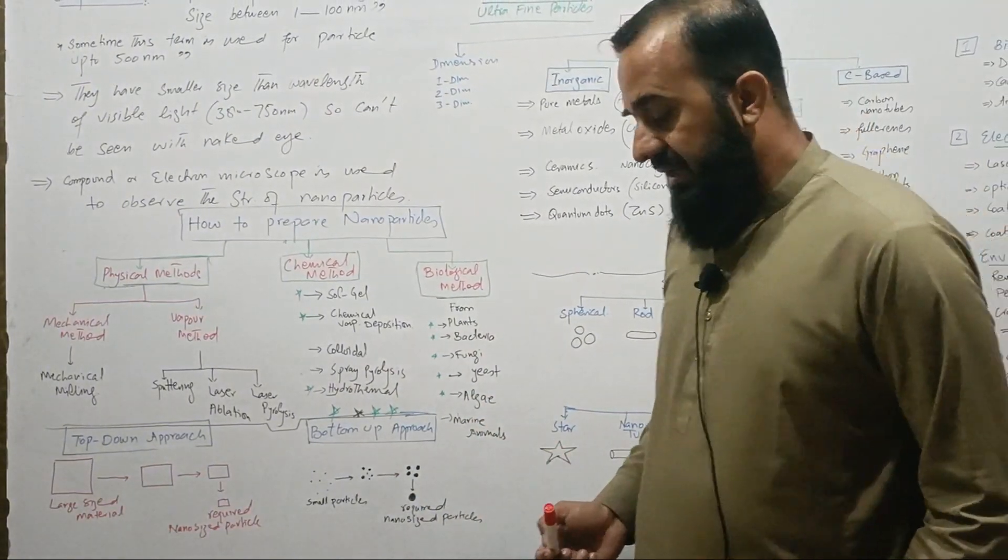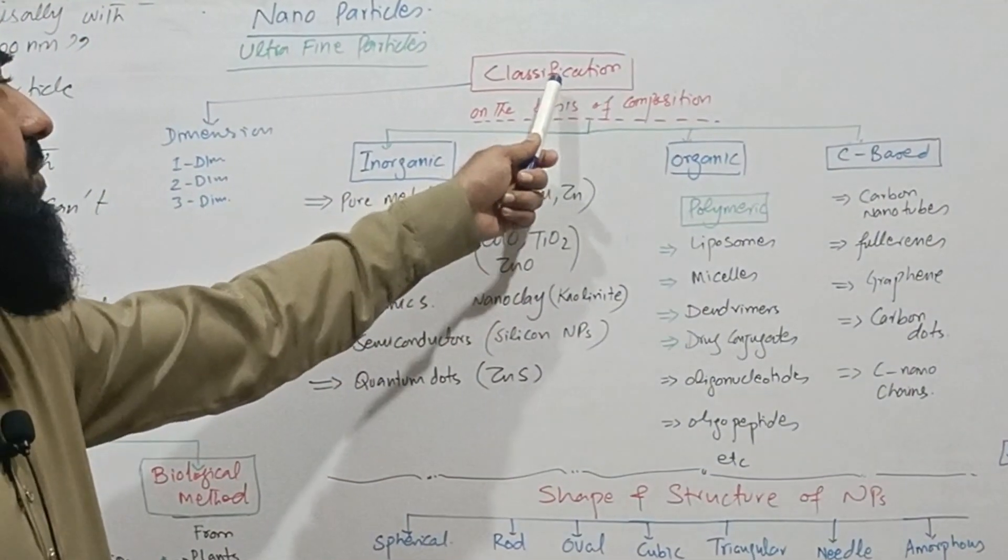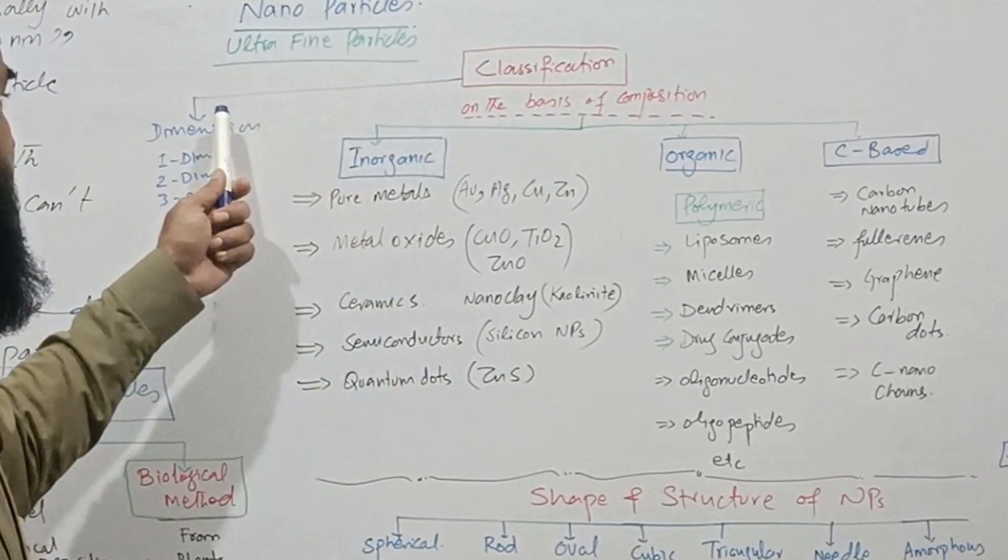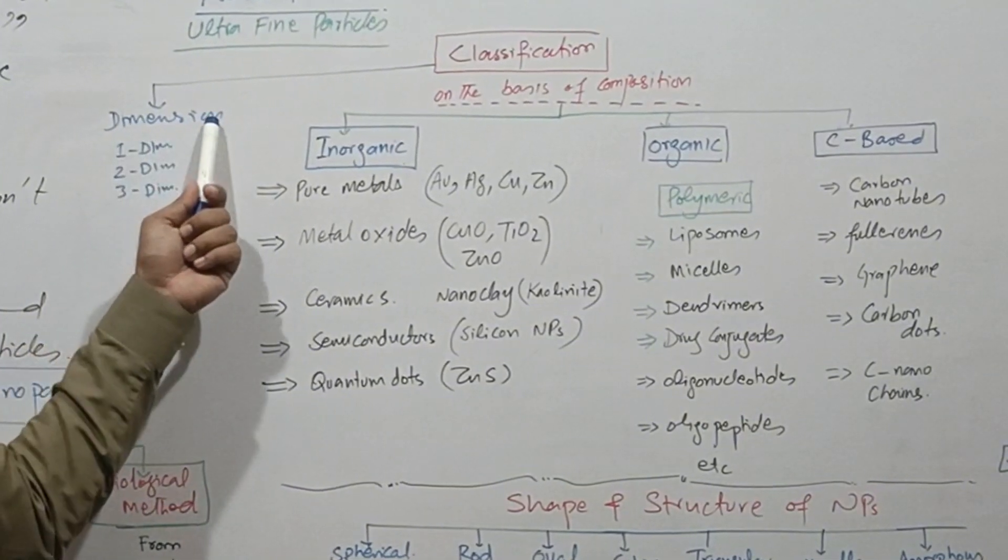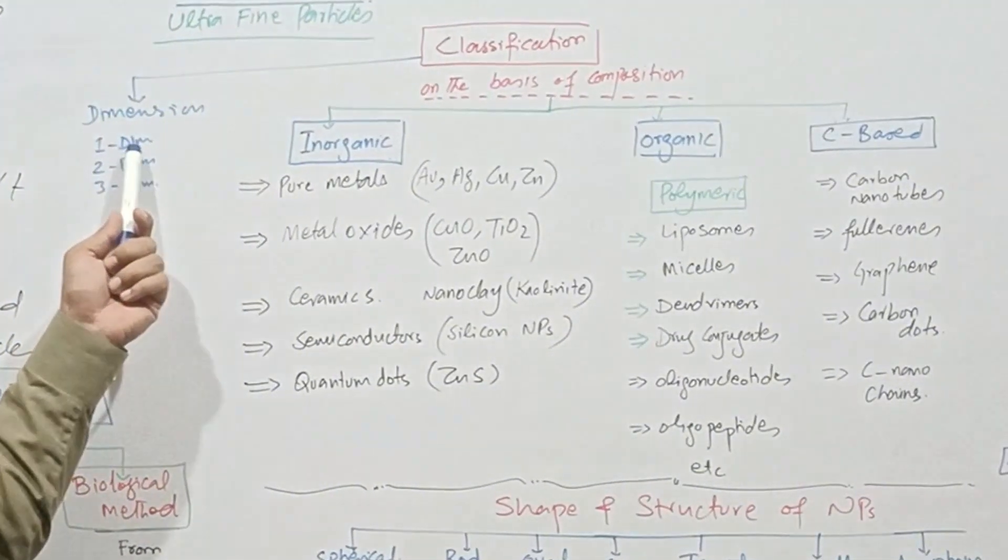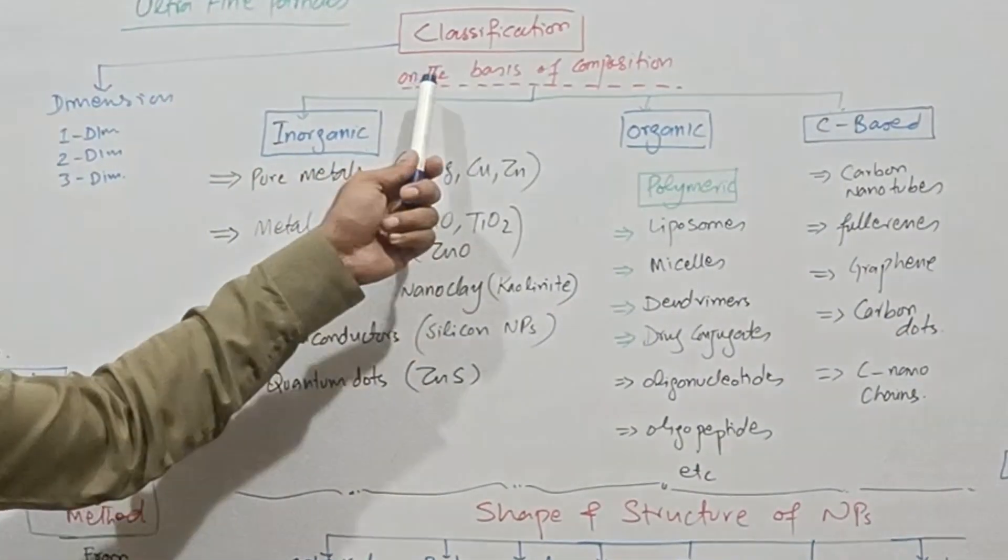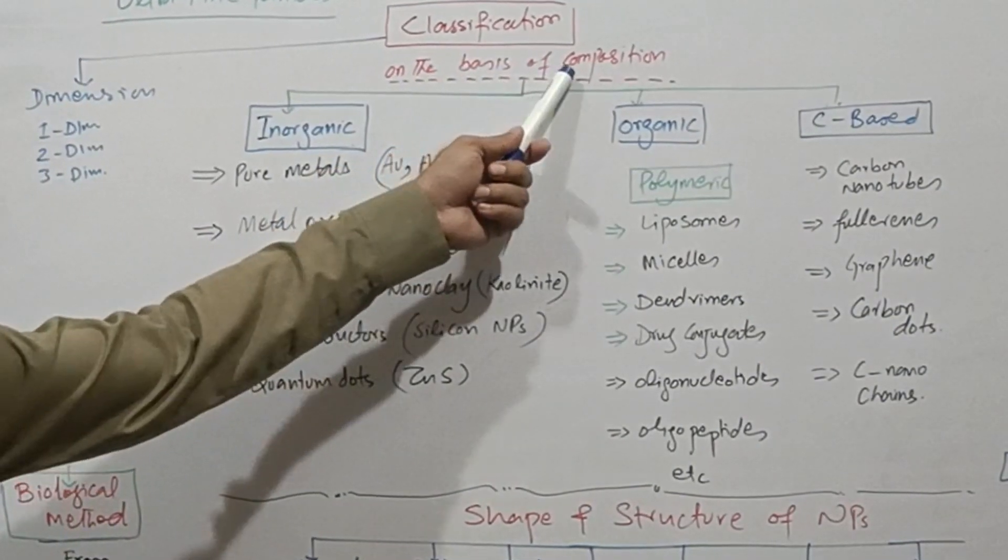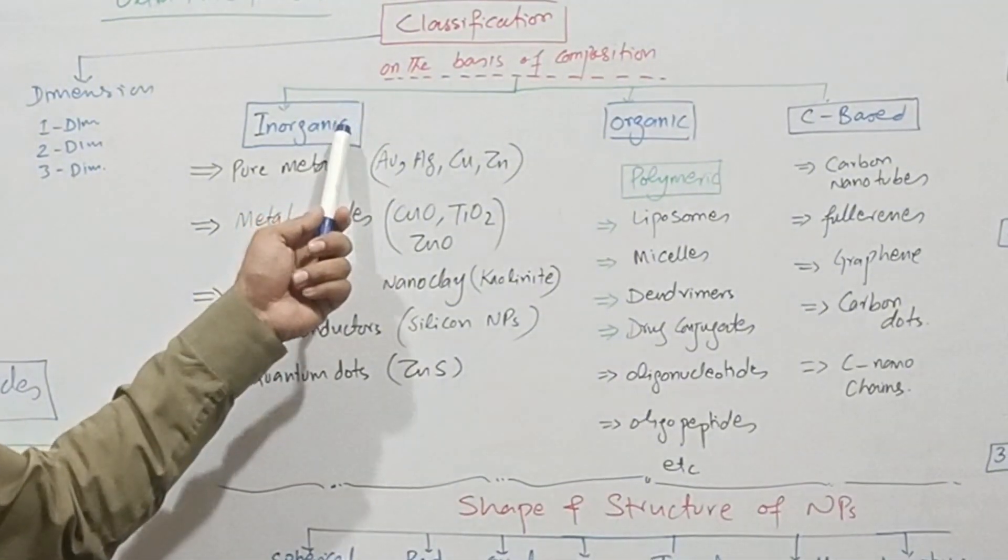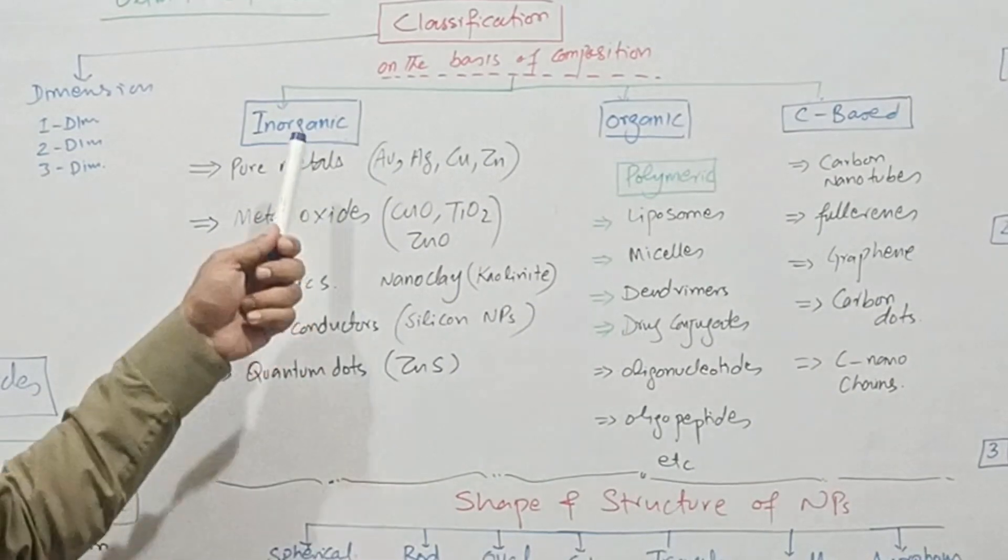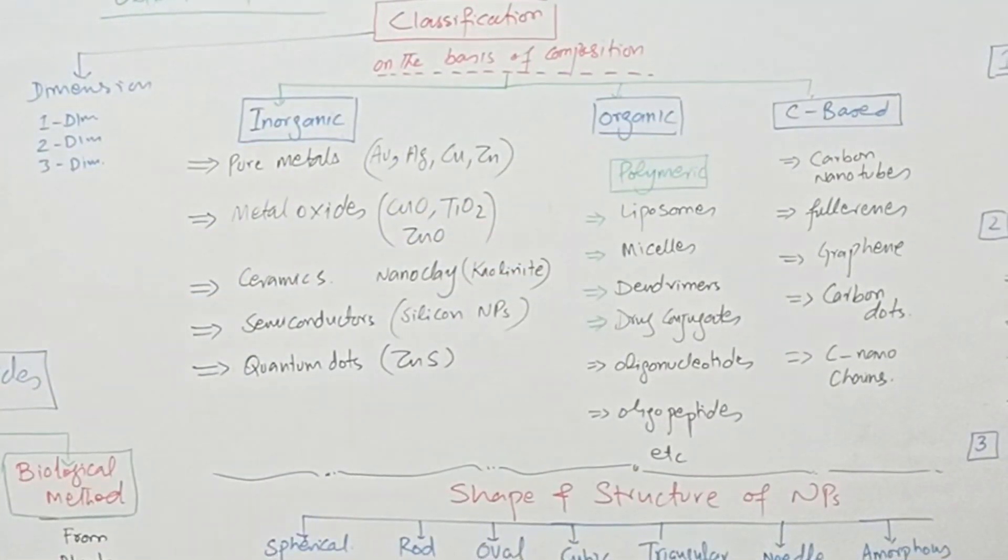Let's see the classification of nanoparticles. We can classify the nanoparticles in two ways: first is a classification based on the dimension of their structure, for example one-dimensional, two, three dimensional. I am going to discuss the classification which is based on composition or on material. On the basis of composition we classify nanoparticles into three major classes: first inorganic nanoparticles, organic nanoparticles, and carbon-based nanoparticles.